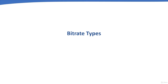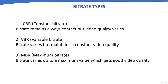There are basically three types of bitrate. First, CBR — Constant Bitrate — where the bandwidth doesn't change but video quality is allowed to vary. Second, VBR — Variable Bitrate — which allows bitrate to change while maintaining a constant video quality level. Third, MBR — Maximum Bitrate — which allows the bitrate to vary but only up to a maximum value, achieving good video quality.